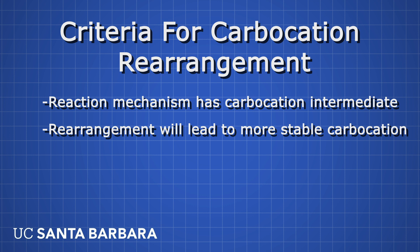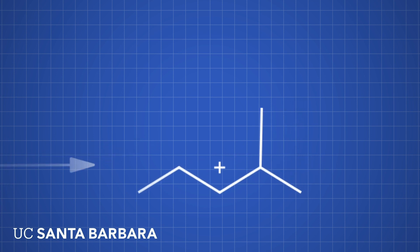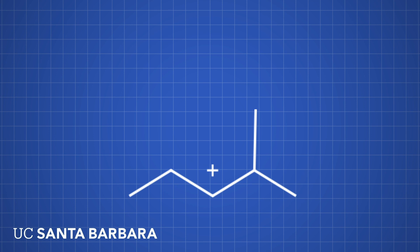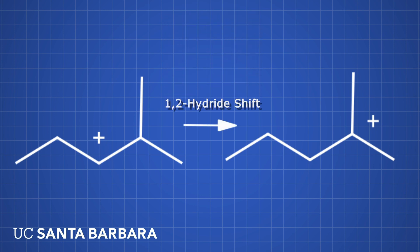Let's go over a few visual examples of 1,2-hydride shifts. A common test question is to give a mechanism and ask if a carbocation rearrangement will occur, and if so, how it will occur. On the screen here I've provided a sample mechanism, and we're going to see if a carbocation rearrangement will occur and perform such a rearrangement. We can already see that the mechanism has an intermediate carbocation, which meets the first criterion. The second thing we need to check is if a rearrangement will actually make the molecule more stable. In this mechanism, we start off with a secondary carbocation intermediate. However, if we perform a 1,2-hydride shift, we can change where the positive charge is located and make a tertiary carbocation. Tertiary carbocations are much more stable than secondary carbocations, and therefore this rearrangement will occur.